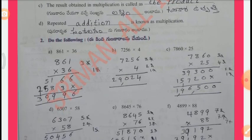Do the following. A. 861 x 36. By multiplication: 6 ones = 6, 6 x 6 = 36, 3 is carry forward, 6 x 8 = 48 plus 3 = 51. Then 3 x 1 = 3, 3 x 6 = 18, 3 x 8 = 24 plus 1 = 25.